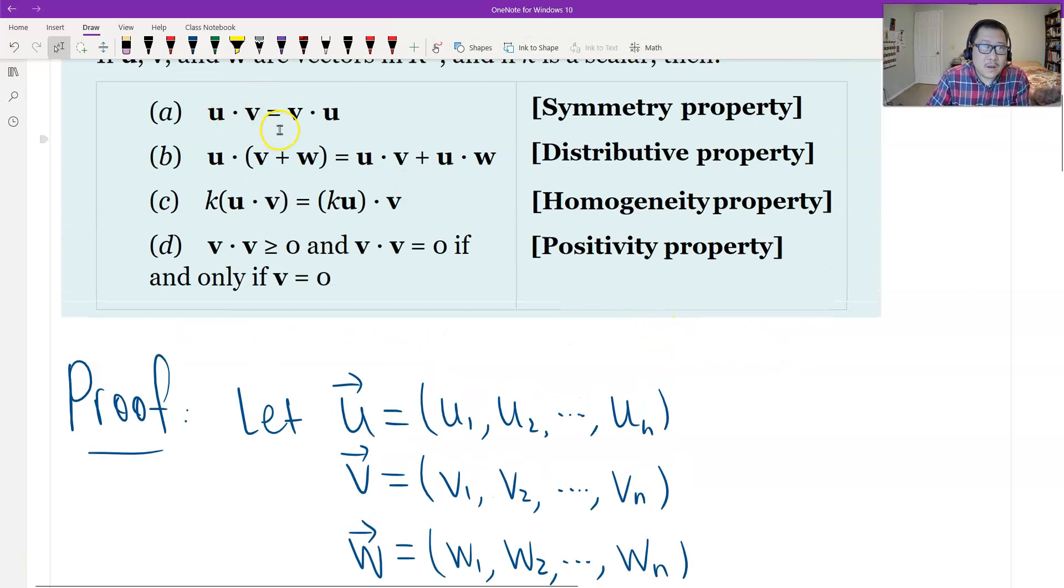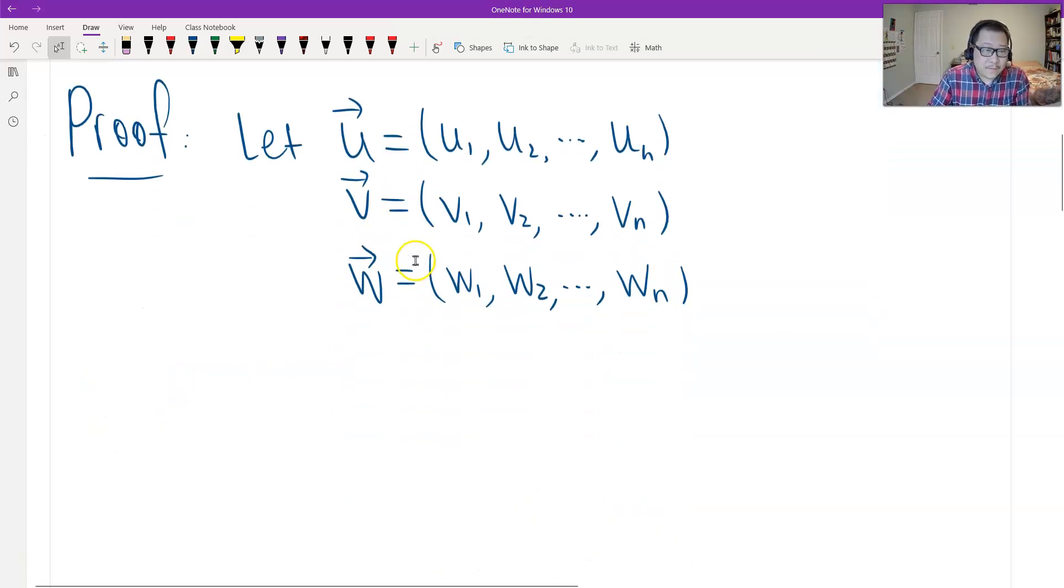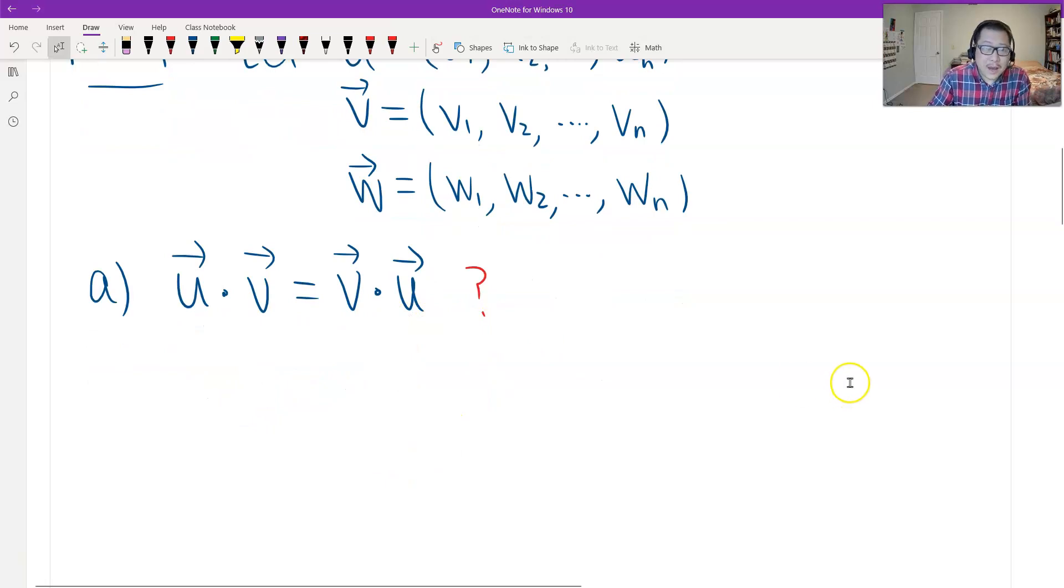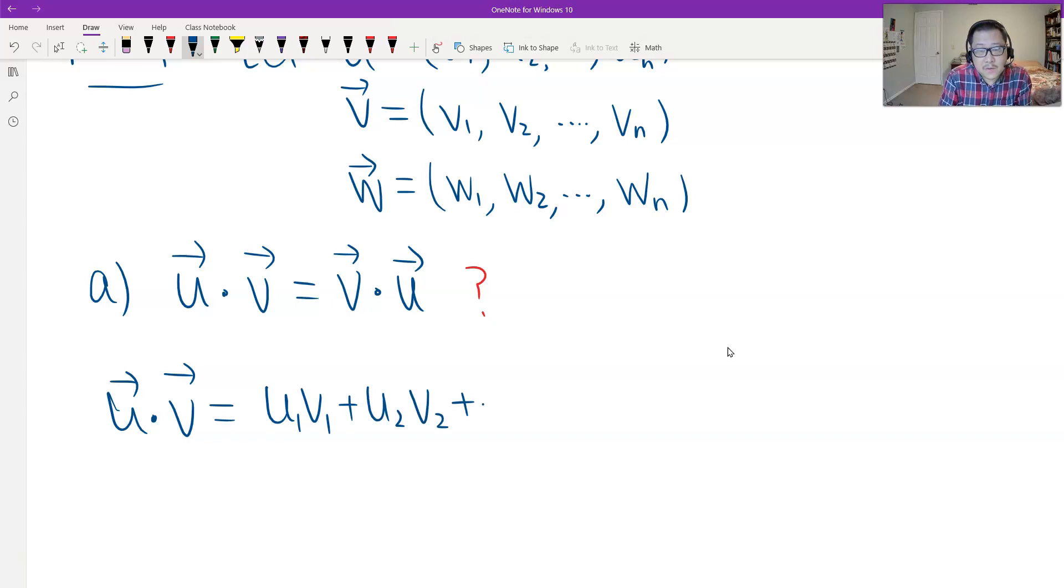And the first, which is commutative. So, the dot product, U dot V equals V dot U. We just do calculations from the left to the right. So, from the left, U dot V. What is U dot V? By the definition, the sum of product, which is U1 V1 plus U2 V2, dot dot dot, plus UN and VN.